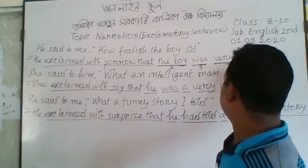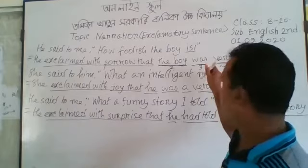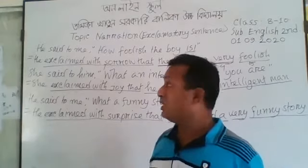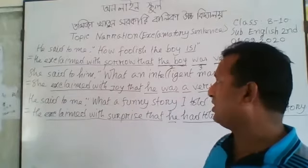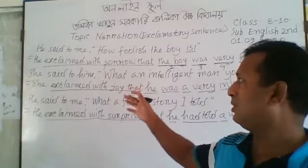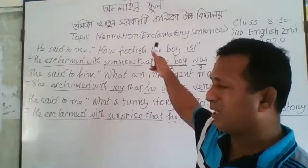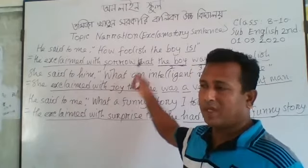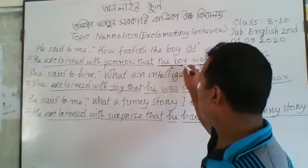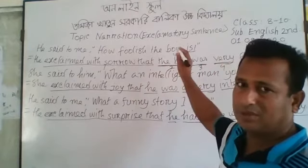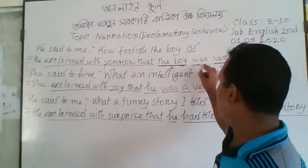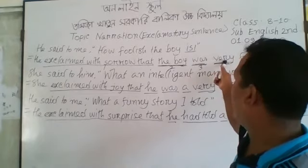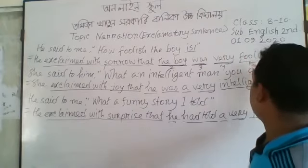If the reported speech of an optative sentence starts with 'how' at the beginning and it also means a negative sentence, I will use 'exclaimed with sorrow that,' then the subject. In all cases and all types of sentences, the second position is the subject, the third position is the verb, the fourth position is 'very,' and the fifth position is the adjective.